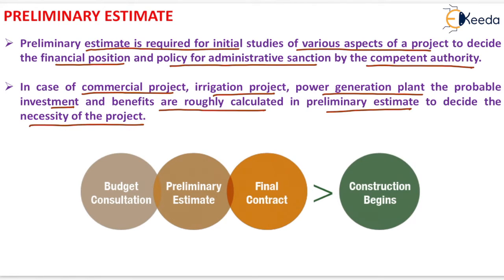In the preliminary estimate process, first the budget consultation is done, next the preliminary estimate is prepared, then the final contract is prepared, and after all these three steps, construction will begin.